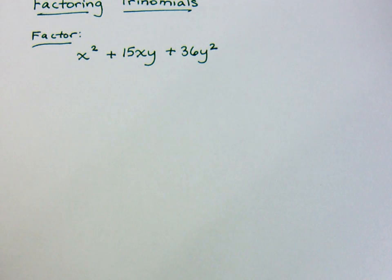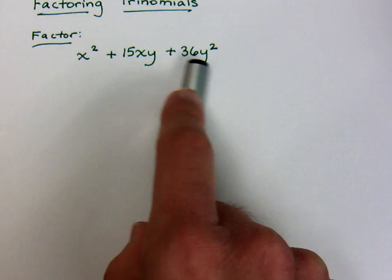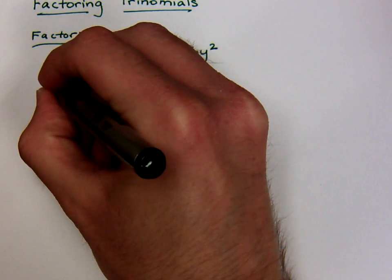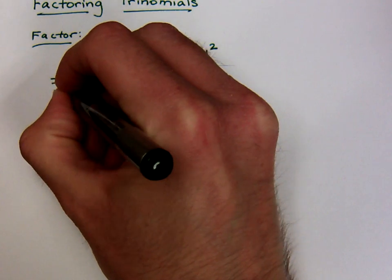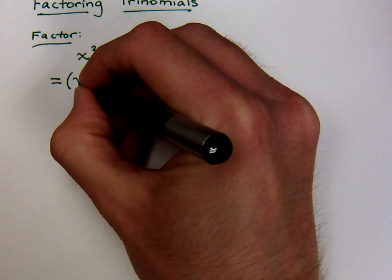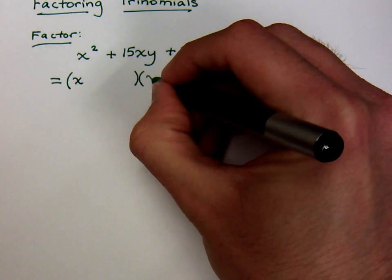Remember, the first thing you want to do is look for the greatest common factor. Now there's nothing that all these guys have in common. And you may be saying, man, this is messed up, I've got x's and y's all over the place, what am I supposed to do? Well, it's really not that bad. You know how to break down the x squared, right? You know the x squared is going to break down as x times x.